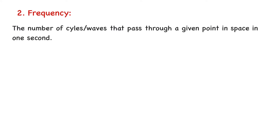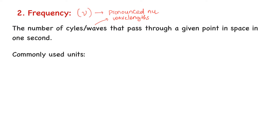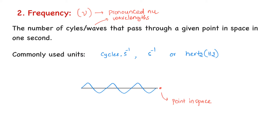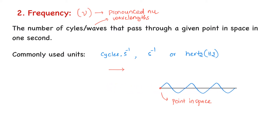The second characteristic is called frequency. The frequency of a wave is defined as the number of cycles or waves that pass through a given point in space in one second. Frequency is represented by the Greek letter nu. The commonly used units for frequency are cycles per second, or simply per second, or Hertz. For example, if three cycles or wavelengths pass through a given point in space in one second, the frequency of the wave is expressed as 3 cycles per second, or 3 per second, or 3 Hertz.